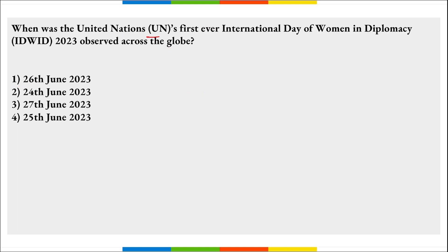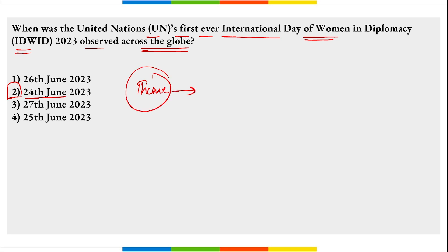When was the UN's first ever International Day of Women in Diplomacy observed? It was observed across the globe on 24th June 2023. The theme is 'Breaking Barriers, Shaping the Future: Women in Diplomacy for Sustainable Development.' It is observed on 24th of June.